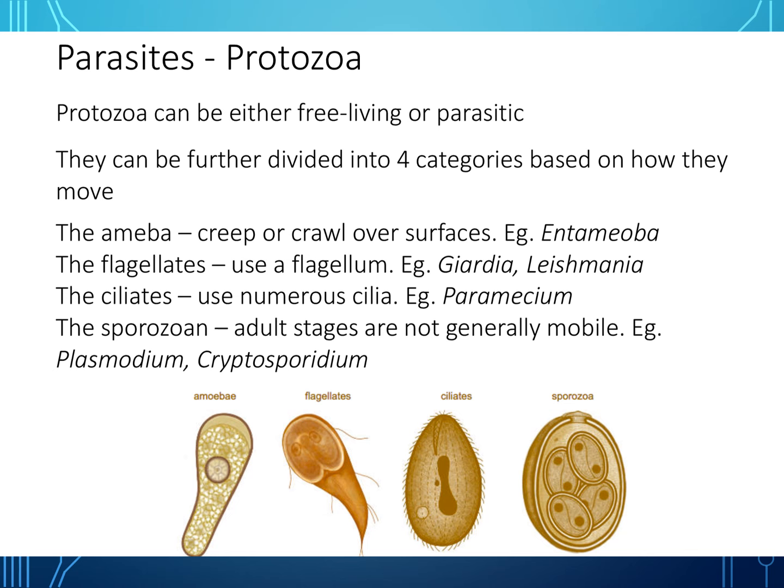Looking at protozoa — these can be either free-living or parasitic, and are divided into four categories based on how they move: the amoeba, which creep or crawl over surfaces (e.g., Entamoeba); flagellates, which use a flagellum (e.g., Giardia or Leishmania); ciliates, which use numerous cilia (e.g., Paramecium); and sporozoans, whose adult stages are not generally mobile (e.g., Plasmodium and Trypanosporidium).